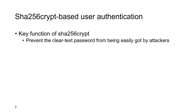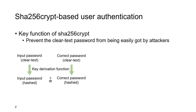SHA-256-crypt is a widely used key derivation function adopted by many Linux distributions. The key function of SHA-256-crypt is to prevent the clear text password from being easily obtained by malicious attackers. To this end, the clear text password is processed by the KDF and stored as a password hash. By comparing the password hashes, the system will know whether the user's password is correct.